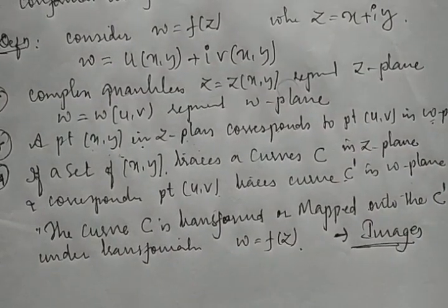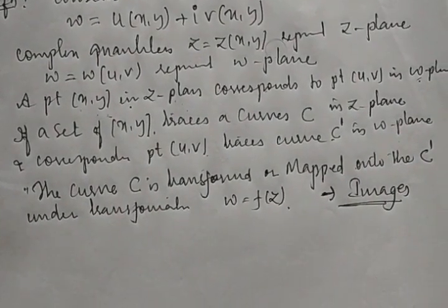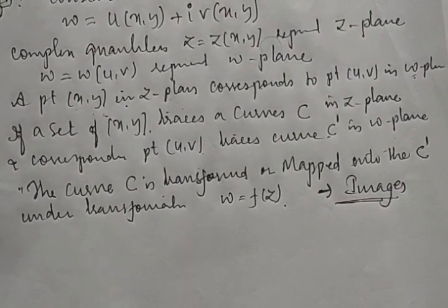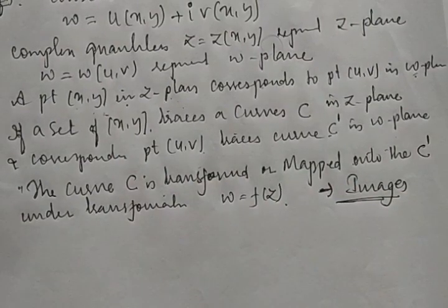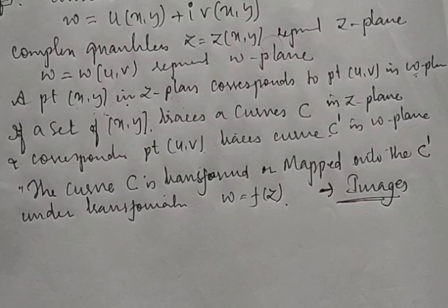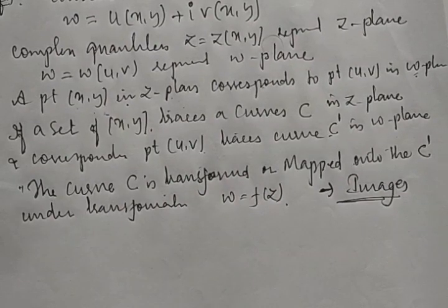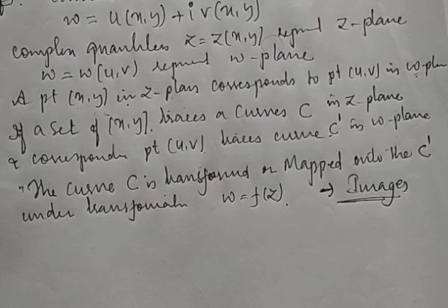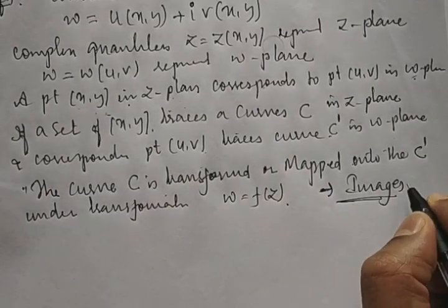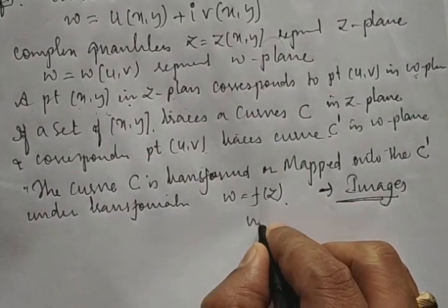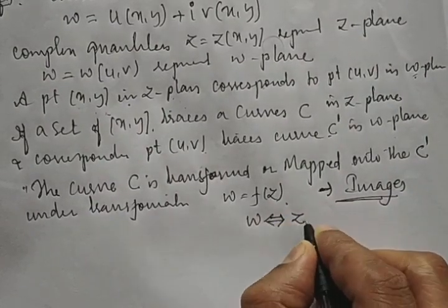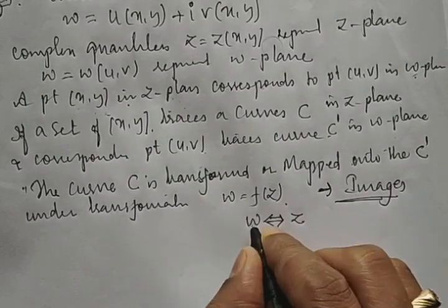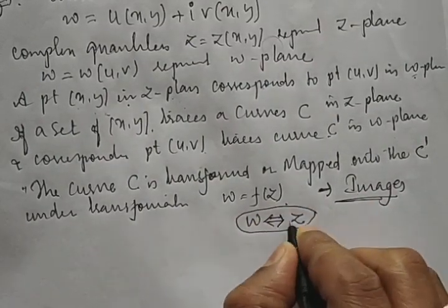These curves are called images of each other. For example, a keyboard acts like the z-plane and a monitor acts like the ω-plane — whatever you do on the keyboard is reflected on the monitor. Similarly, actions in the z-plane have their image in the ω-plane, and vice versa.